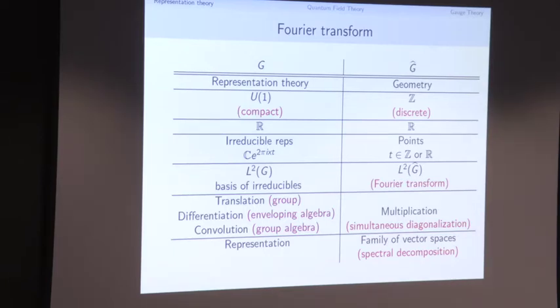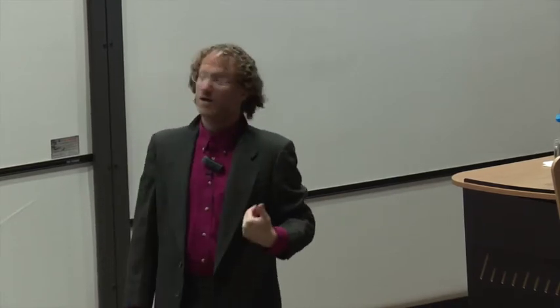For example, the circle group's dual G-hat is just the integers — a compact group has a discrete dual. If you take a non-compact group such as the real line, then the unitary dual is isomorphic to the real line again. The points of the dual correspond to the irreducible representations of G.